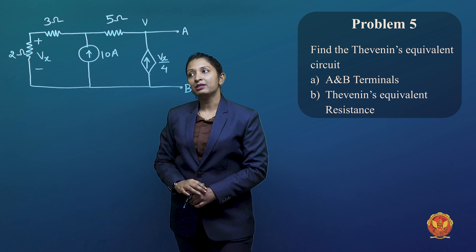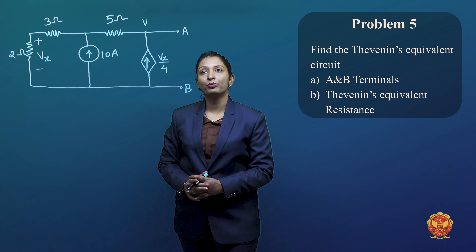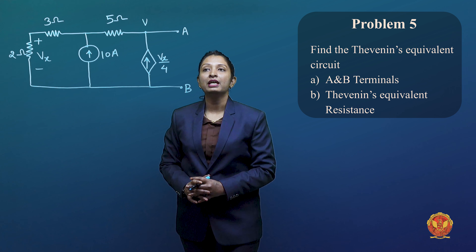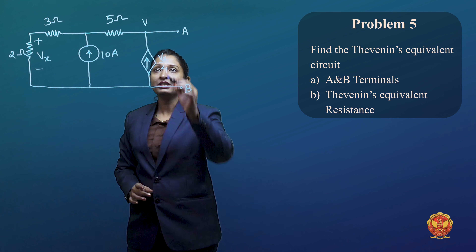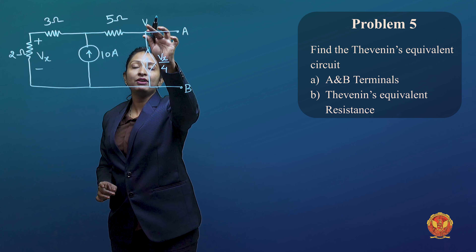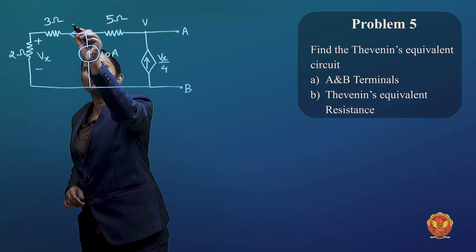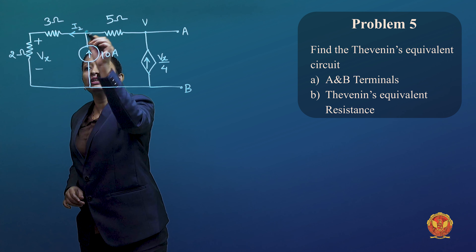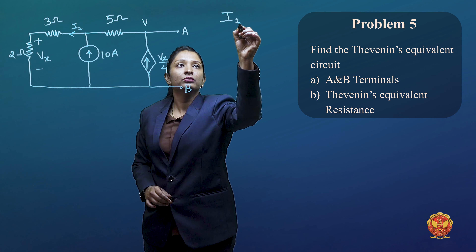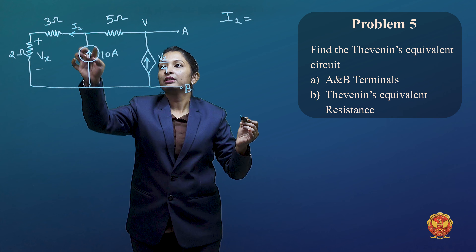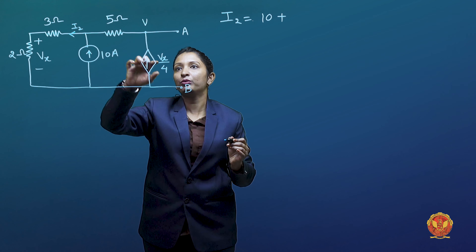The first step is to remove the load. The load is not connected and the terminals are open. The second step is finding out Vth. We have to find out this voltage V. Let's see what current is here — we assume the current is I2. So I2 is equal to 10A plus Vx divided by 4. We assume Vx is across the open terminal.